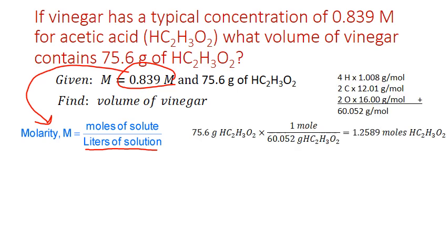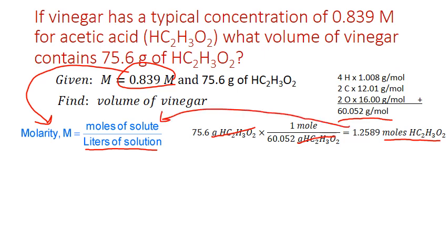We divide by the molar mass of acetic acid (HC2H3O2), which is 60.052 g/mol. It goes in the denominator so the gram units cancel, leaving moles. This gives us 1.2589 moles of acetic acid, which we can substitute into the formula.